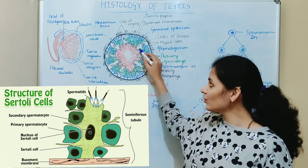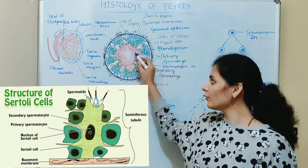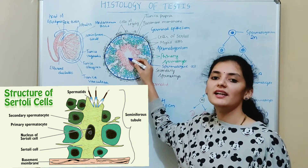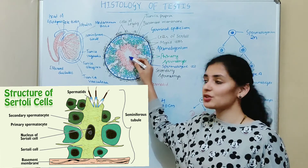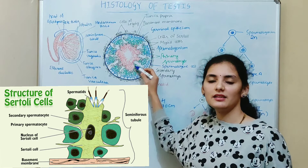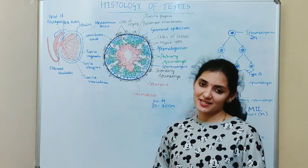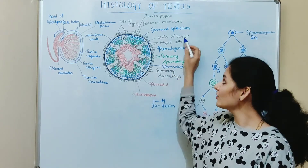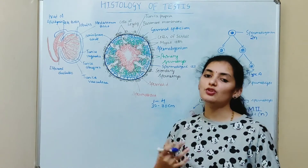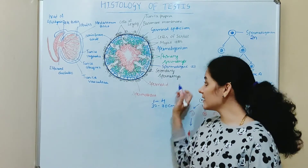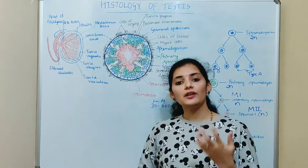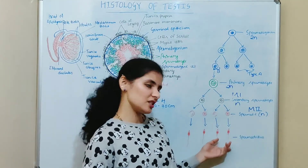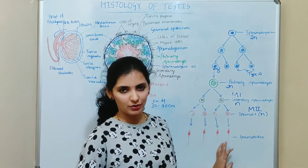Apart from that, Sertoli cells also produce certain fluid which helps in the movement of sperm inside the seminiferous tubule. They also act as a blood-testis barrier, which prevents rejection of spermatogenic cells by the immune system. The other type of cell present in the germinal epithelium is the spermatogenic cell. Compared to cells of Sertoli, spermatogenic cells are numerous in number, and it is these spermatogenic cells which undergo regular mitotic division, differentiate, and ultimately produce sperm — a process called spermatogenesis.